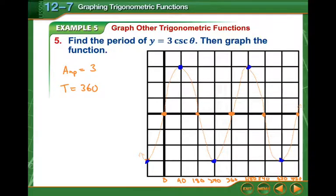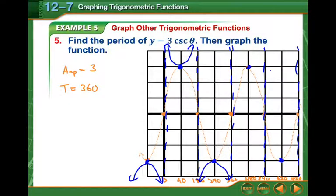Cosecant is going to be at these same points, the peaks and the troughs of our graph. But it has asymptotes, one at the y-axis, one at 180. Every time it crosses the theta axis, there's an asymptote there. So our graph actually does this, just a little tiny U-shaped parabolas over and over again, like that.